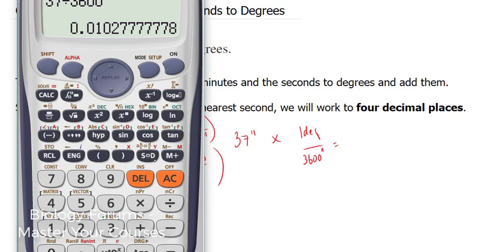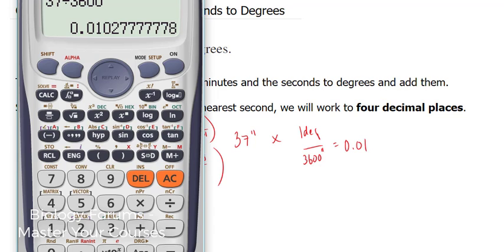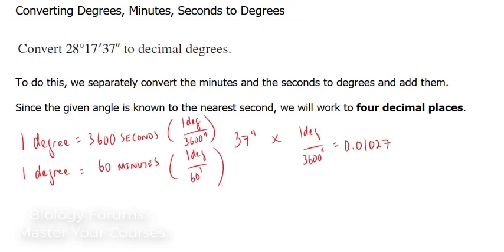I'm going to use four decimal places just in case something goes wrong. 0.0103. There you have it. So now, 37 seconds is equal to that many degrees.